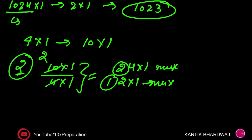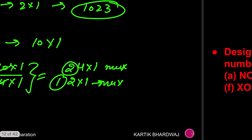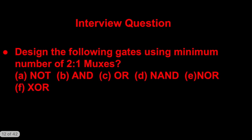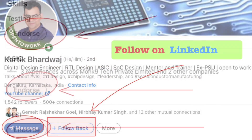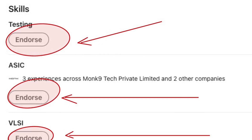For now, my objective was to show how many 2x1 MUXes you need and how to generalize the formula — especially since this involves binary numbers. For the next lecture, you have to try building these circuits using 2x1 MUXes on your own. Follow me on LinkedIn and you can endorse my skills if you like. Thank you, have a nice day.